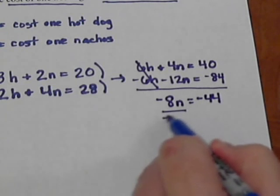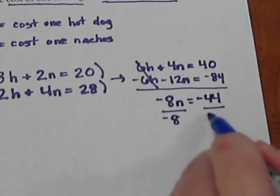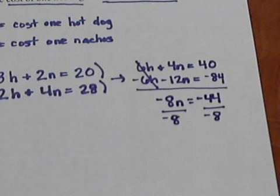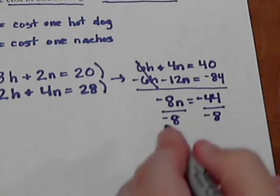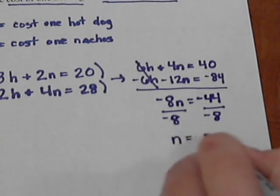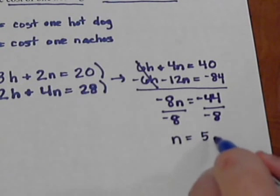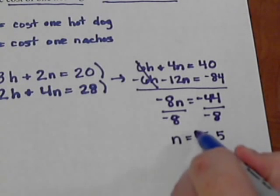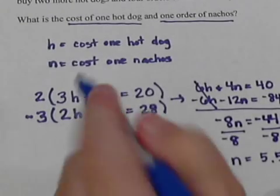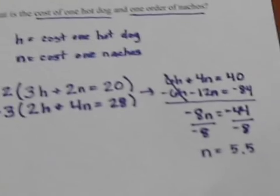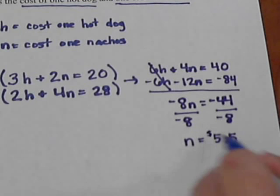We divide both sides by negative eight, and so we get n equals 5.5. Since we know that n is the cost of one order of nachos, this is the dollar amount. So one order of nachos costs $5.50.